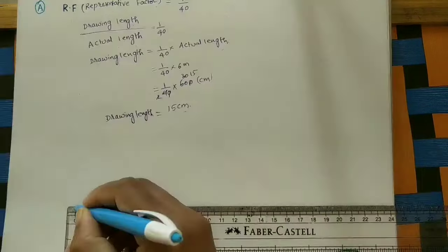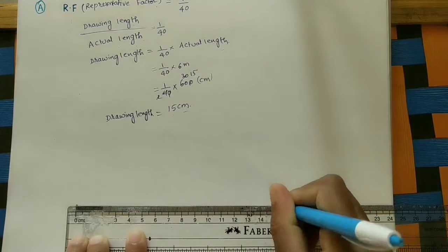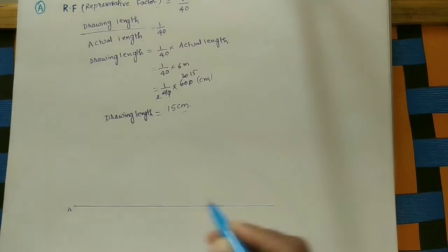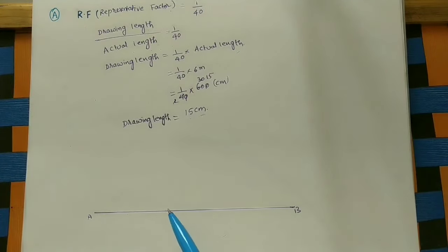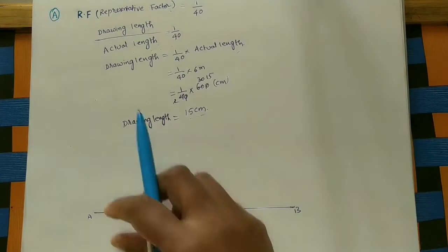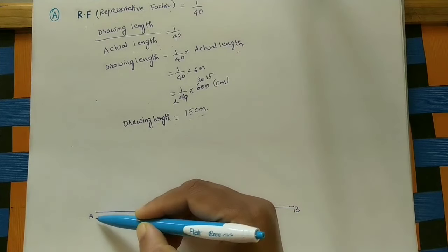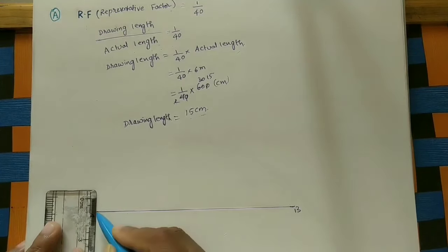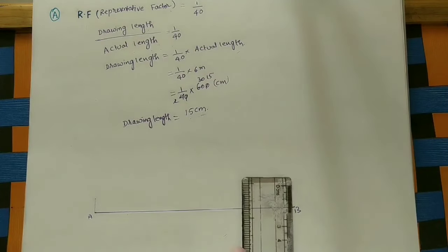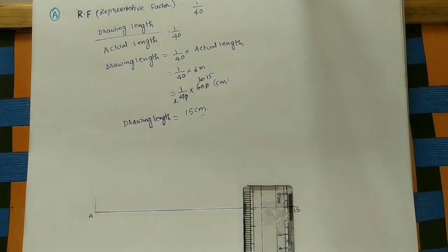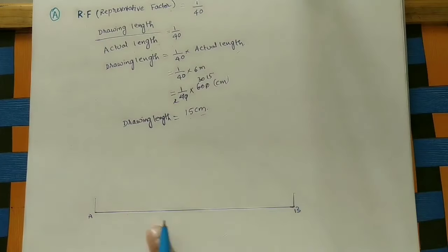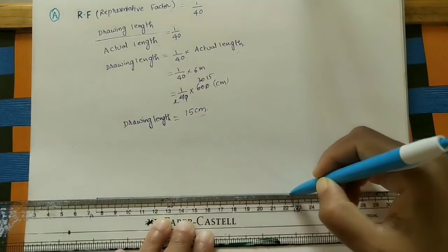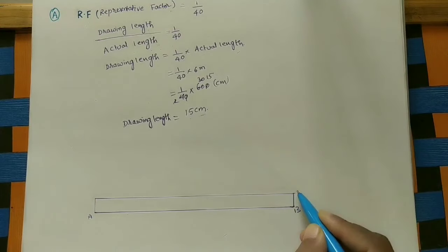Draw a 15 centimeter line. Mark the endpoints: here is 0, here is 15. Join these two ends to get a 15 centimeter line, naming the endpoints A and B. To give some thickness to the scale, take one centimeter arbitrary width on both sides. Join these ends to get corners C and D, completing the scale rectangle.